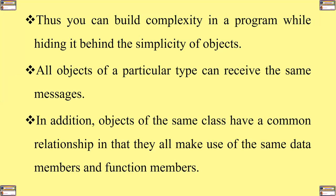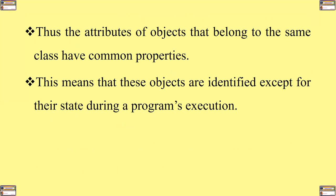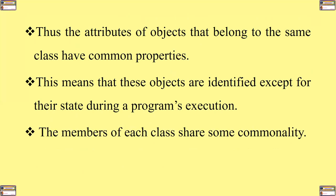In addition, objects of the same class have a common relationship in that they all make use of the same data members and function members. Objects of the same class have a common relationship in that they all make use of the same data members. Thus, the attributes of objects that belong to the same class have common properties, meaning these objects are identified by their state during a program's execution.